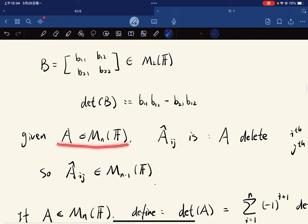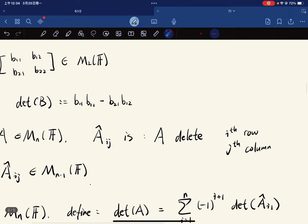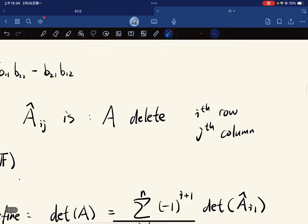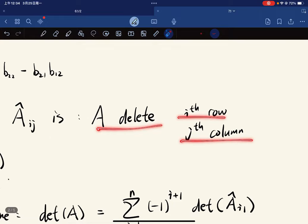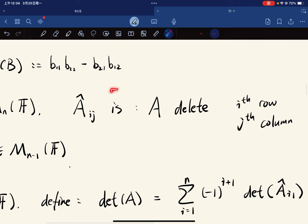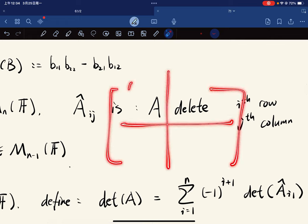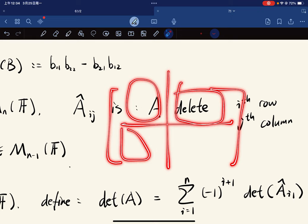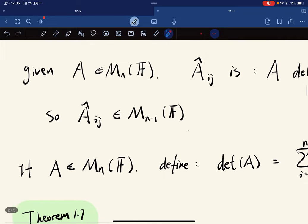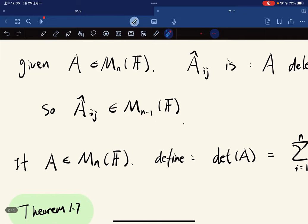So given an n times n matrix, define A hat ij as deletion of i-th row and j-th column. So basically you have a matrix and i-th row and j-th column are deleted. The remaining matrix we stick together is our new matrix A hat ij. So it's n minus 1 times n minus 1 matrix.